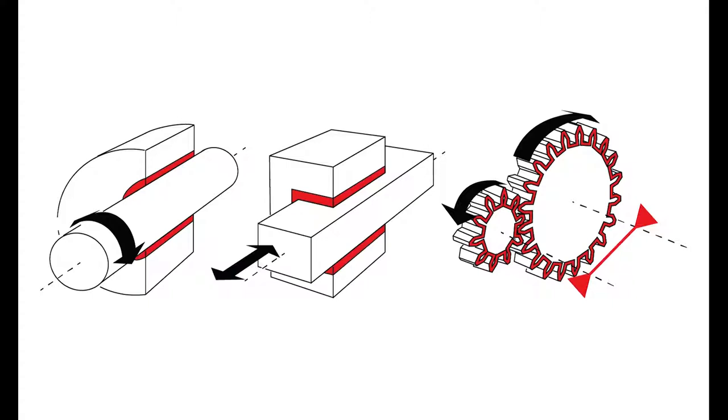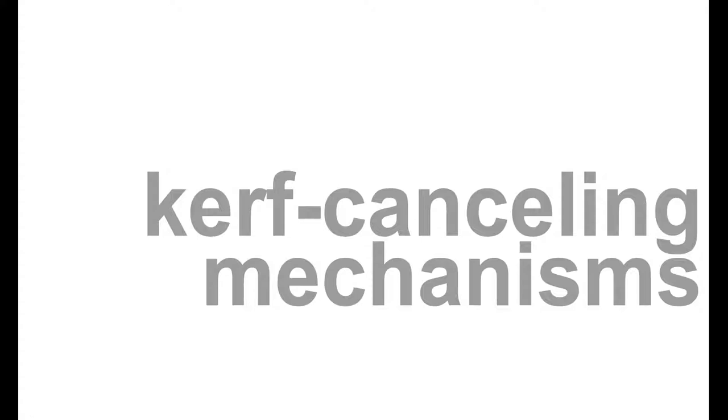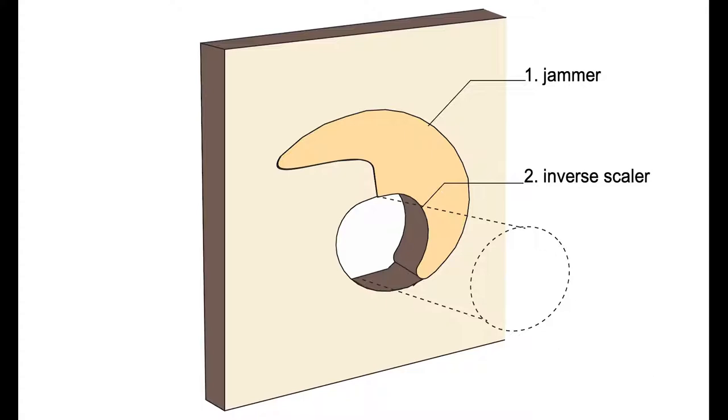We've made a range of mechanisms kerf canceling, such as bearings as we just saw, sliding mechanisms, and mechanisms that have to engage with one another, like a pair of gears. To understand how exactly this works, let me explain it at the example of the bearing.